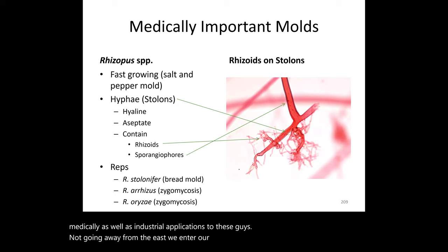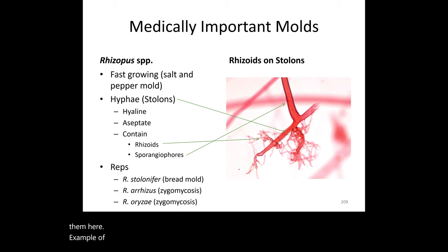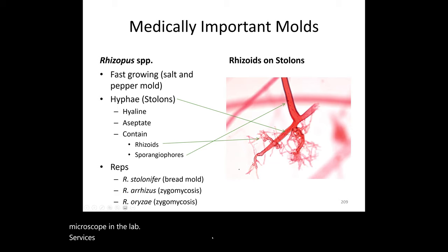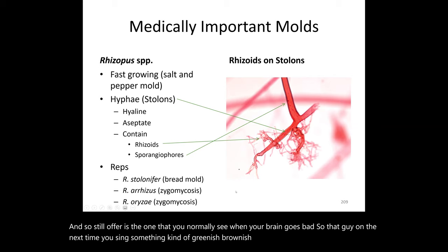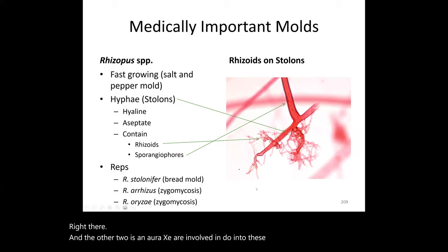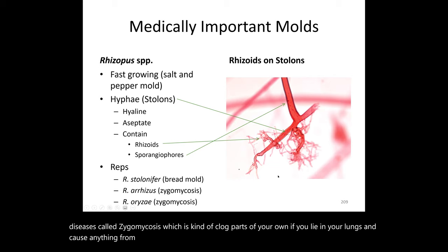Moving from yeasts to molds — these all have medical or industrial applications. The infamous mold Rhizopus has several species to know: Rhizopus stolonifer is what you see when bread goes bad — that greenish-brownish-black growth. Rhizopus oryzae and Rhizopus arrhizus are involved in heavily damaging respiratory diseases called zygomycosis, where they clog the alveoli and can cause anything from asthma to breathing difficulties to death.